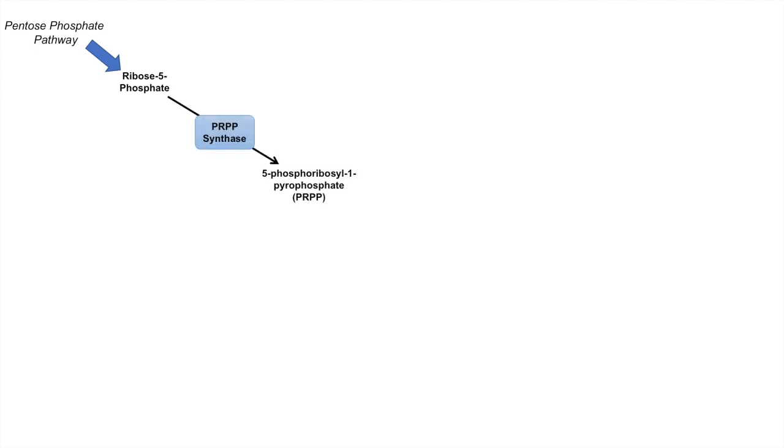We start with the pentose phosphate pathway in purine synthesis. The pentose phosphate pathway produces ribose-5-phosphate, which then gets processed into 5-phosphoribosyl-1-pyrophosphate, or PRPP, by the enzyme PRPP synthase. PRPP synthase is inhibited by ADP and GTP and activated by inorganic phosphate.